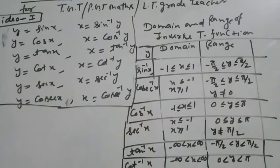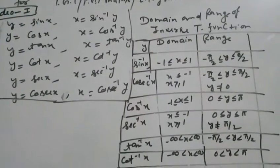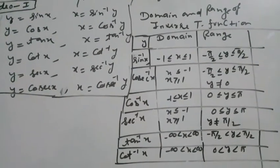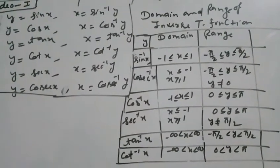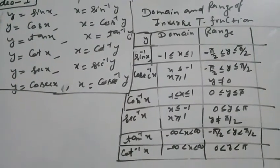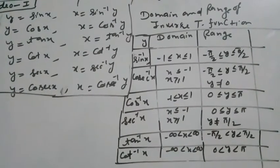In tan inverse x, the domain is minus 1 to plus 1 and the range is 0 to pi. In tan inverse x, the domain is minus infinity to plus infinity and the range is minus pi by 2 to pi by 2. For cot inverse x, the domain is minus infinity to plus infinity and the range is 0 to pi.